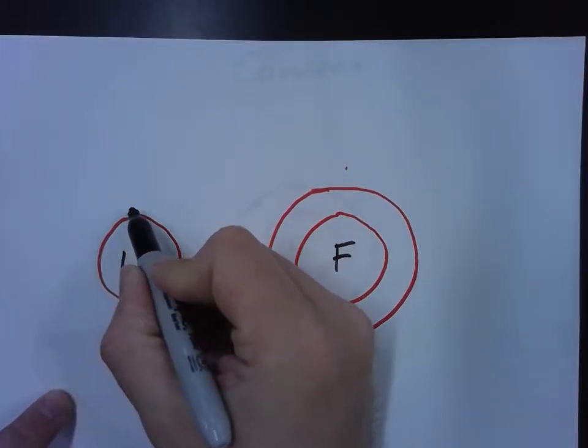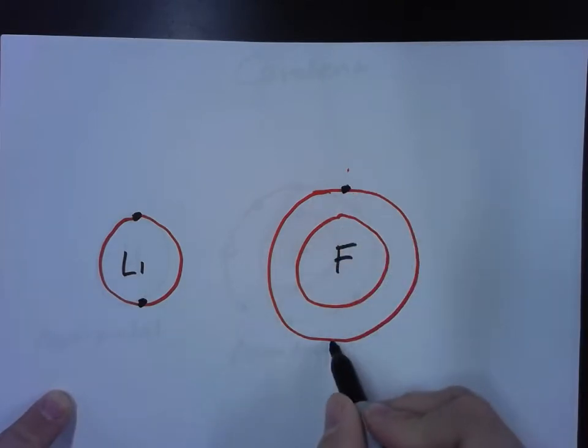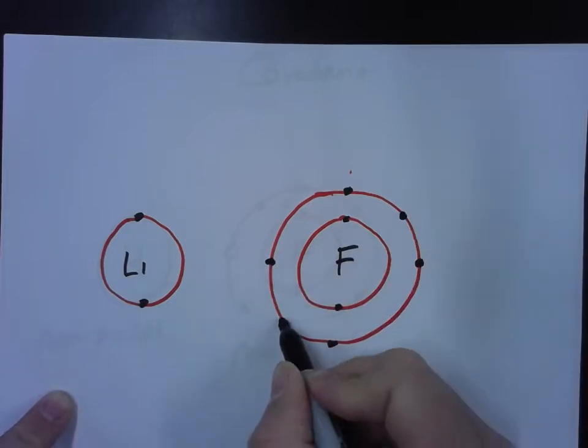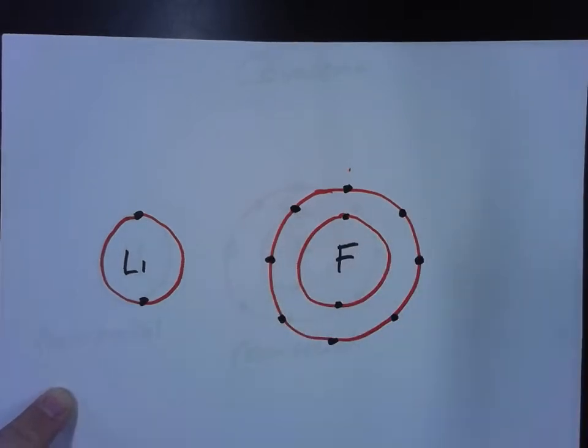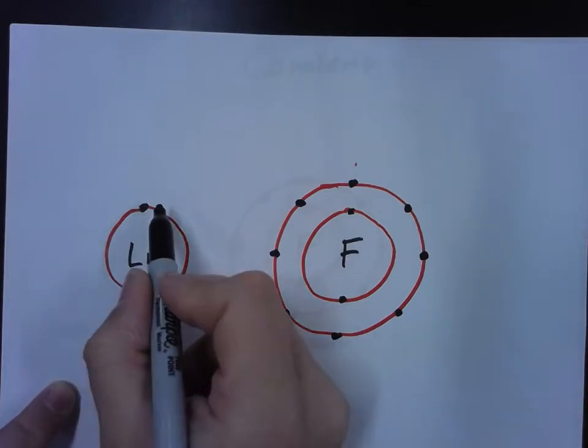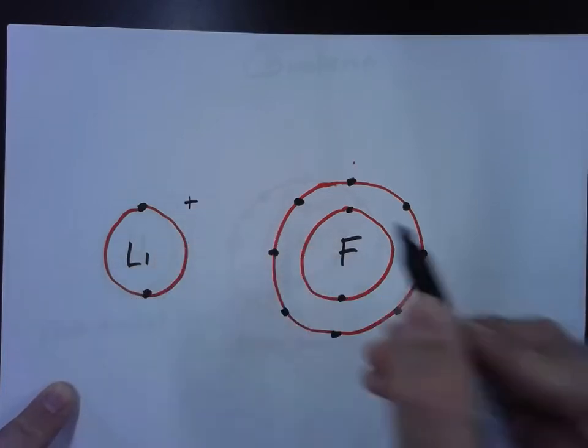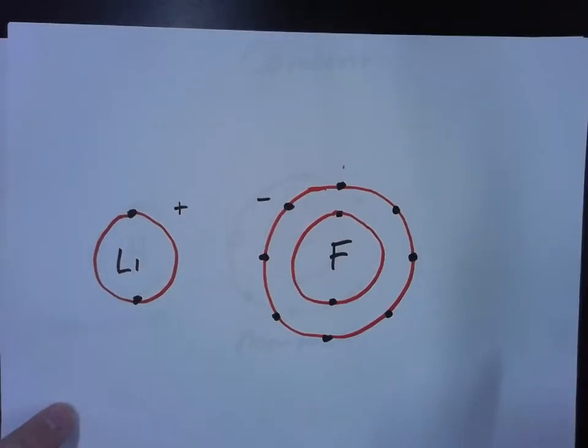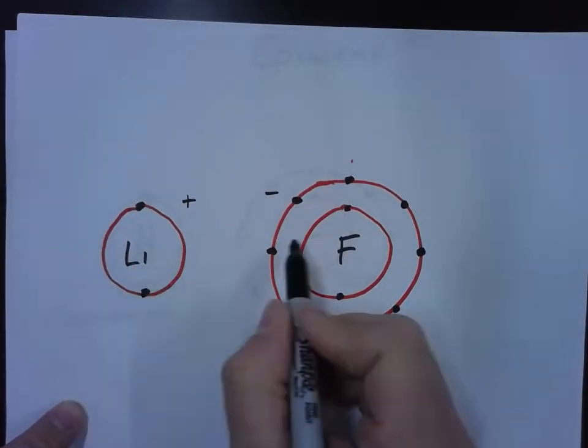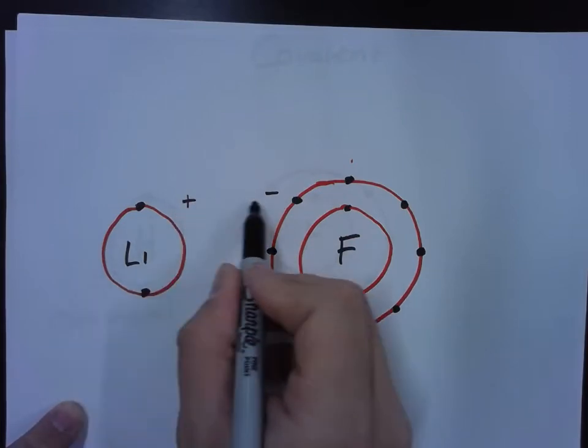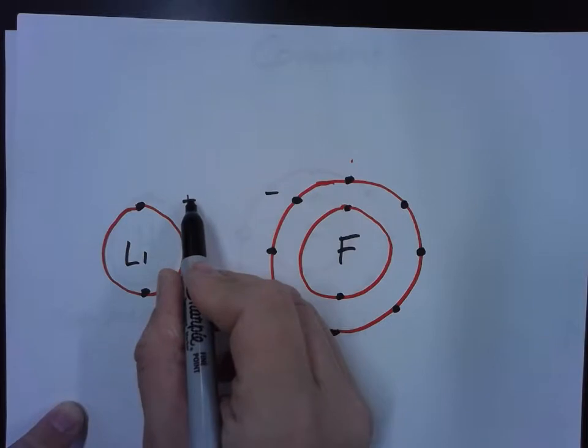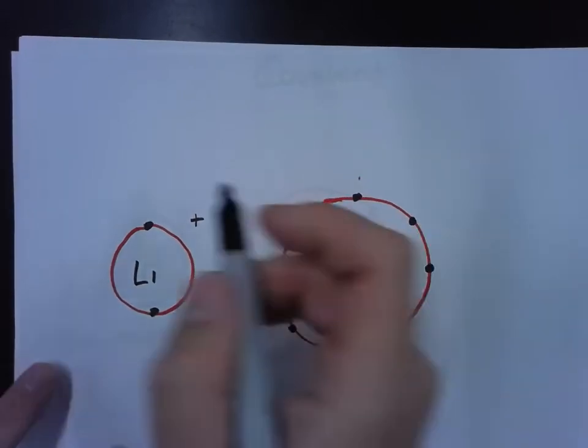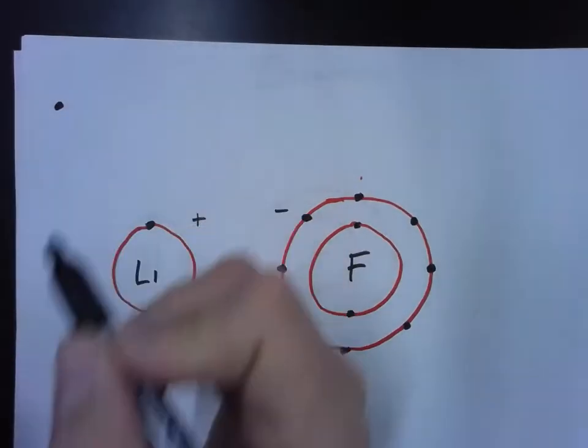And what we end up with then is this. That's what we end up with. Lithium has now lost an electron, so it's got a positive charge on it. And fluorine has gained an electron, so now fluorine's got a negative charge on it. And so what happens is these two elements are bonded together as a result of these charges. They're ions. They become ions and they're bonded together in an ionic bond.